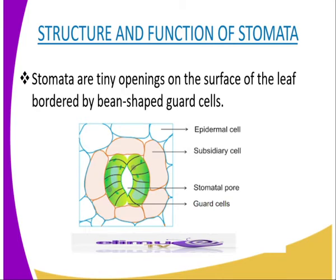The stomata allow gaseous exchange to take place in plants. Guard cells also control the opening and closing of the stomata, and I hope you can see the guard cells from our diagrammatic representation. Because in our diagram, we have the guard cells, we have the stomatal pore, we have the subsidiary cell, and we have the epidermal cell. I am just explaining whatever you are seeing from the diagram.